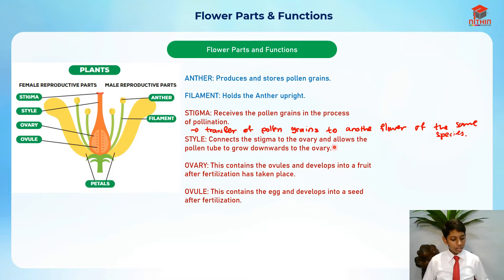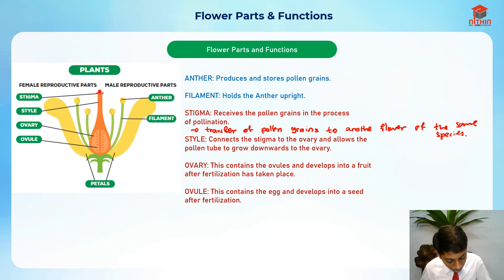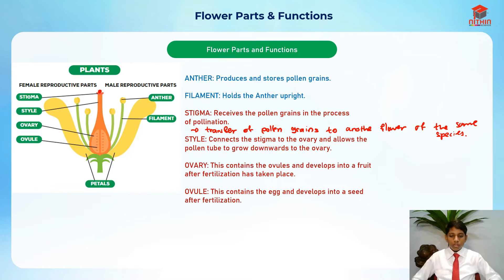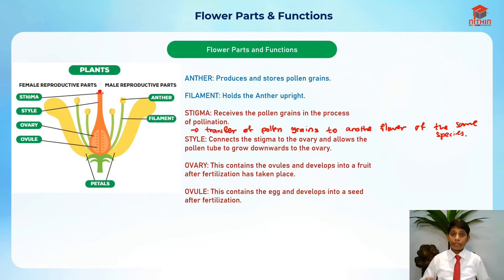The style connects the stigma to the ovary and allows the pollen tube to grow downwards to the ovary. After pollination, the pollen grain grows down into a tube and goes down to fertilize with the ovules in the ovary. It doesn't actually fertilize directly with the ovule as a whole.